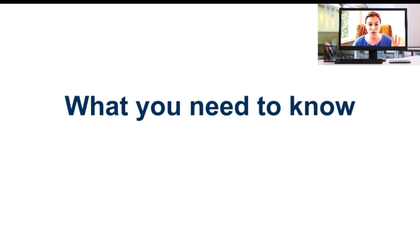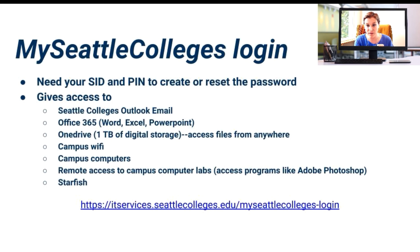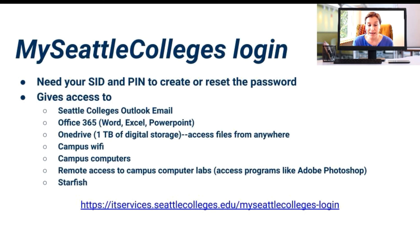There are three things you need to know to use Starfish. The first thing is your MySeattle College's username and password, which you do need your student ID and PIN to either create or reset the password. Not only does this account give you access to Starfish and all student services, but it also gives you access to your Seattle College's email and Outlook, an Office 365 account with Microsoft Word, Excel, PowerPoint, and OneDrive with one terabyte of digital storage. When on campus, this account also gives you access to Wi-Fi and campus computers, as well as remote access to log into any computer lab from anywhere in the world.